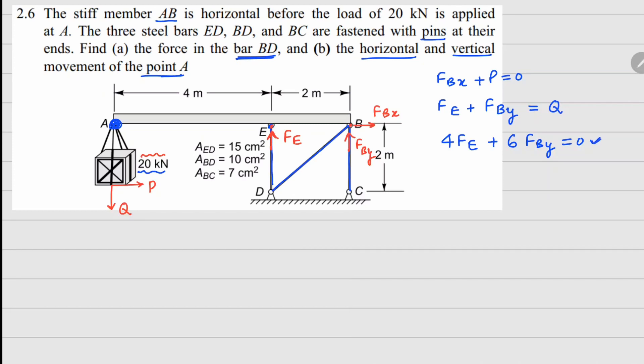From this relationship we can see that Fe is minus 3 over 2 FBy. If I substitute back into this equation, minus 3 over 2 FBy plus FBy, which is minus FBy divided by 2, equals Q.